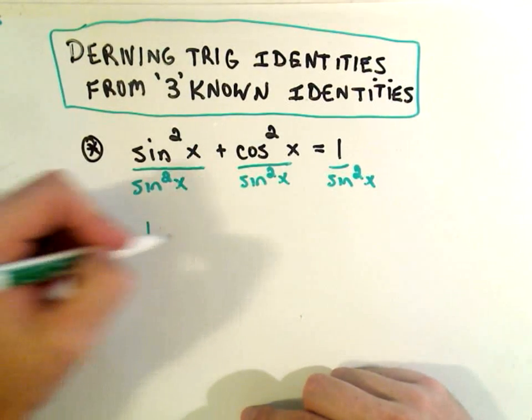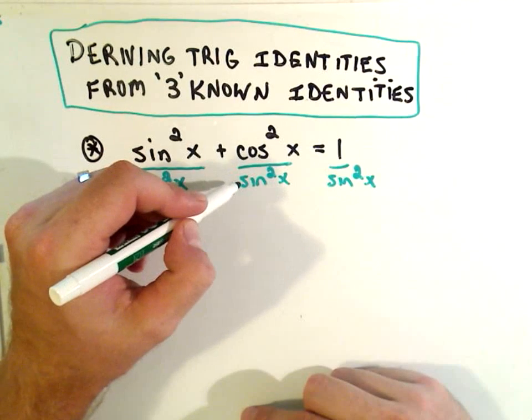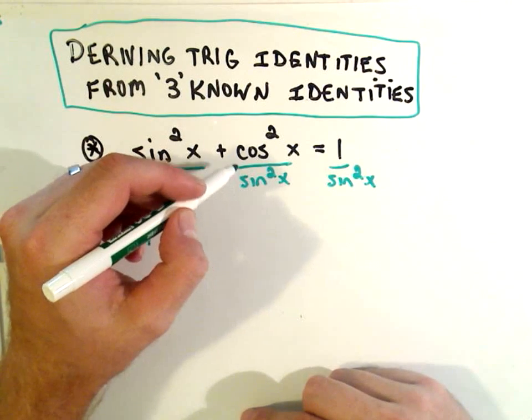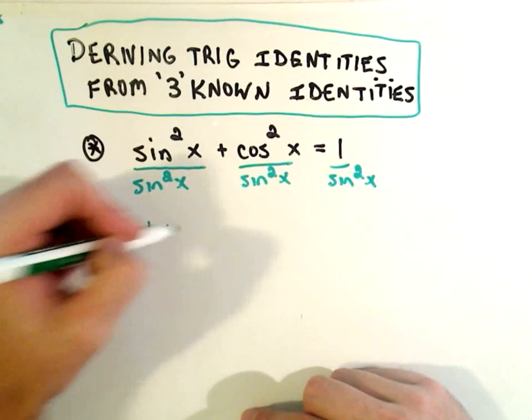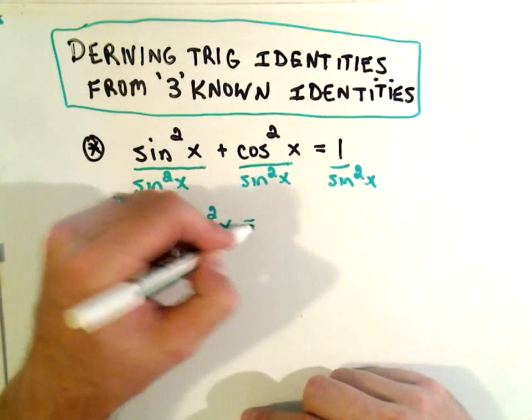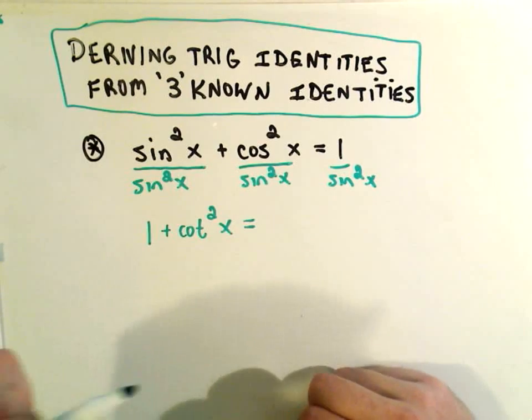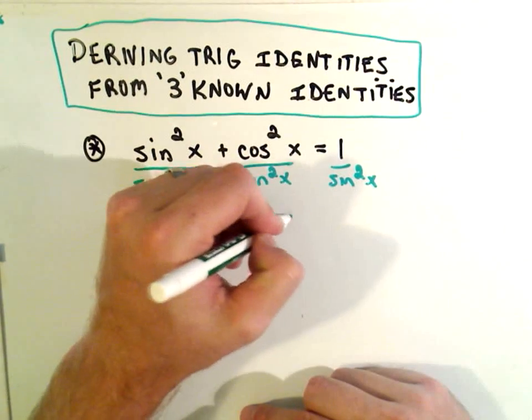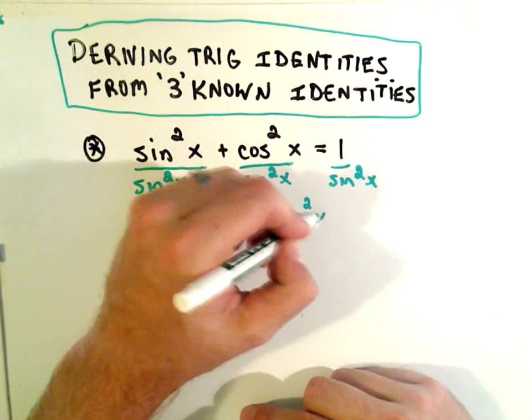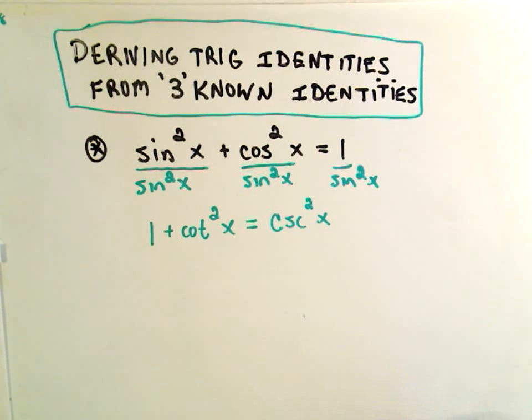If you divide everything by sine squared, well sine squared over sine squared is one. Cosine over sine is cotangent, so cosine squared over sine squared is going to be cotangent squared. And then one over sine squared is cosecant squared. And that's one of your trig identities.